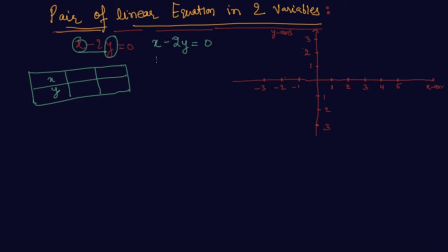I will directly write x equals 2y by taking the 2y on this side. First, let me assume if the value of x is 0, what will be the value of y? If I put the value of x equals 0, we will get y is 0 also.